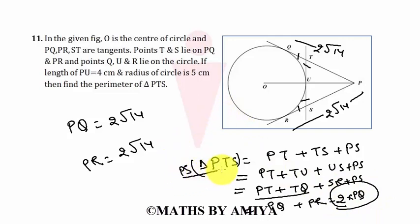So the perimeter of triangle PTS, this triangle is twice the perimeter of tangent PQ. And we have PQ is 2 root 14. So the perimeter is twice of 2 root 14. It is 4 root 14. So our required answer is 4 root 14 centimeter.